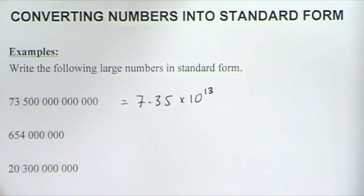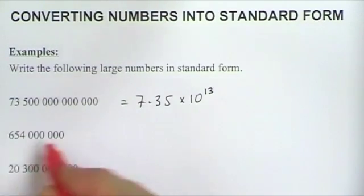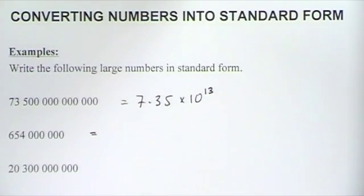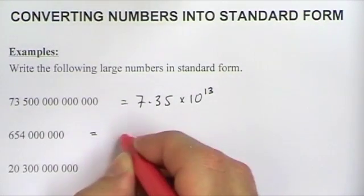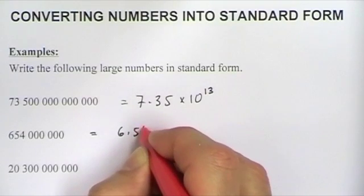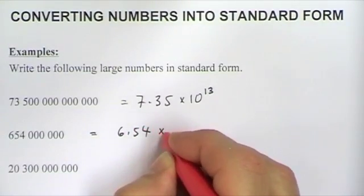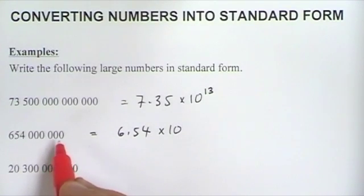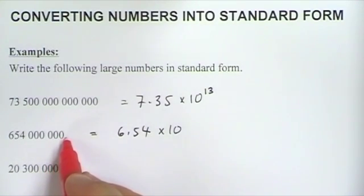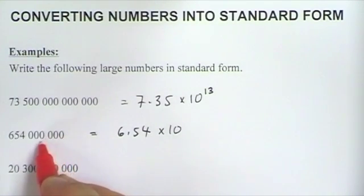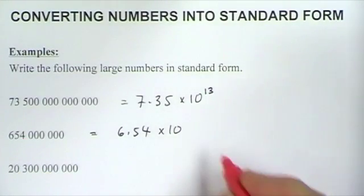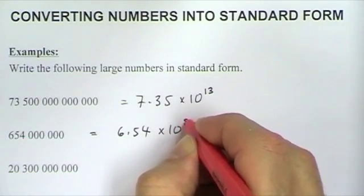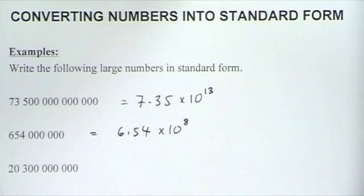For the second number, the standard form representation must have a number between 1 and 10, so that's 6.54. We've moved the decimal place 8 places, so it's 6.54 times 10 to the 8.